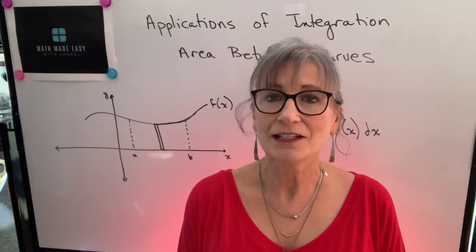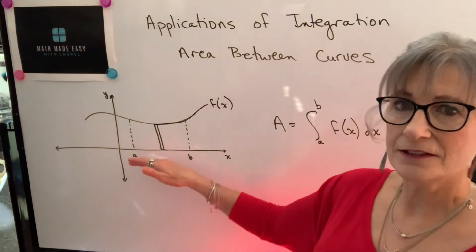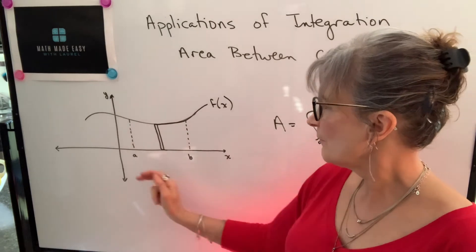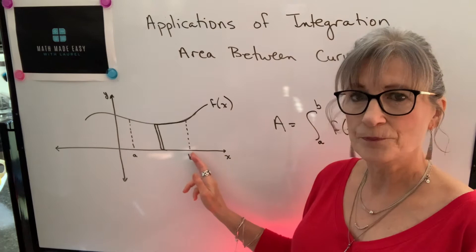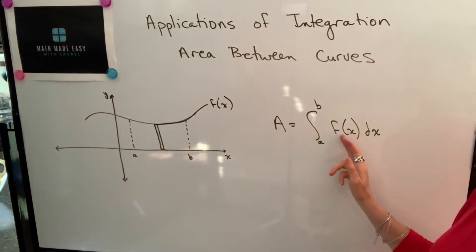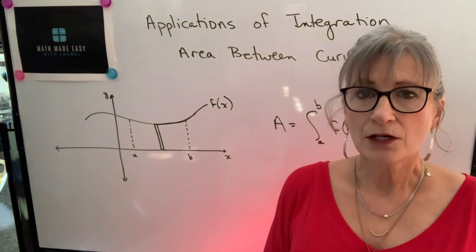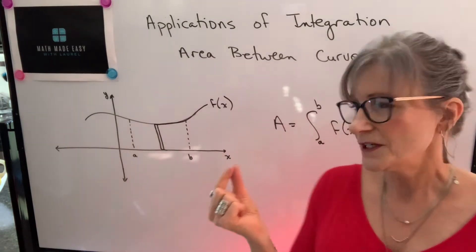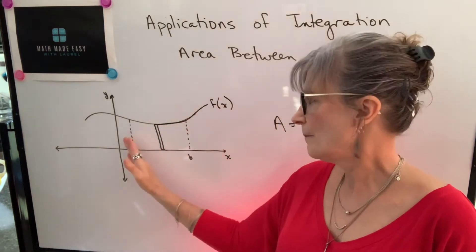We previously talked about finding area below a curve or under a curve and above the x-axis. If we had a general curve f of x and we wanted to find the area of this region from x equals a to x equals b, we can do so by finding the definite integral of f of x dx from a to b. What we're actually doing when we find that area is we're finding the sum of all these tiny, tiny rectangles inscribed under that curve from a to b.